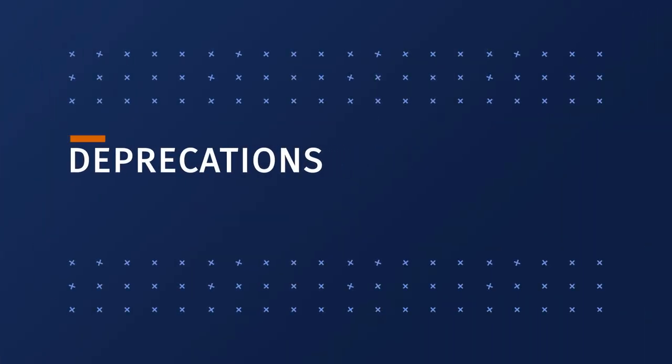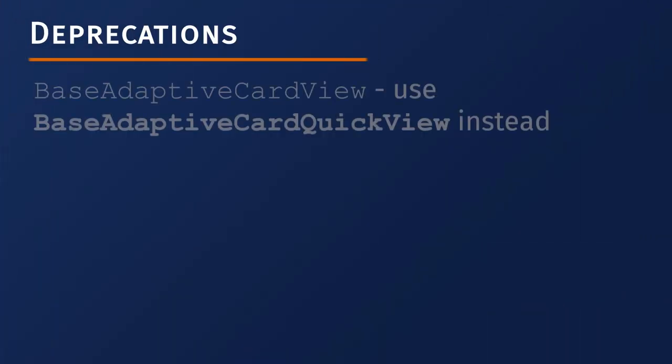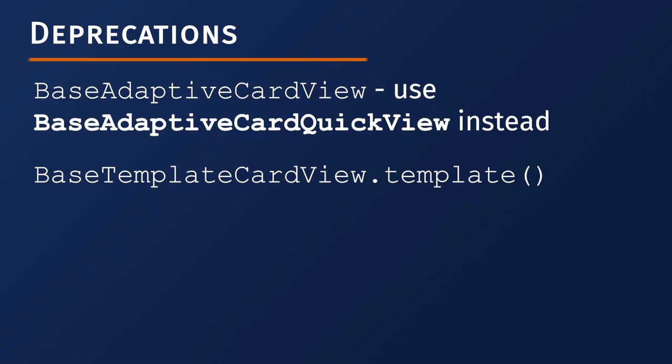There are two deprecations related to ACEs. The first is the class BaseAdaptiveCardView, which was used as the base class for Quick Views — it's been replaced by a new class called BaseAdaptiveCardQuickView. The other deprecation is the template method on the BaseTemplateCardView class. That and all of its descendants have been deprecated; we used to override that to configure the cards being used, but Microsoft doesn't want us doing that anymore.